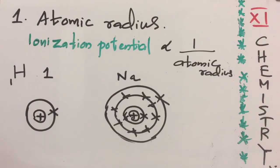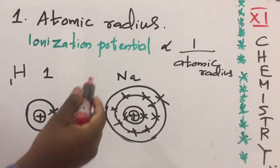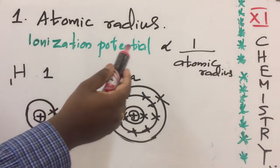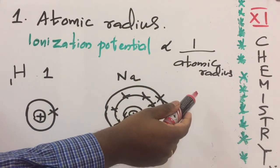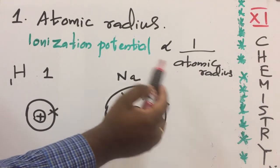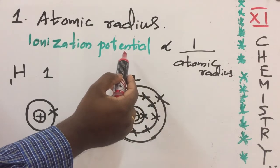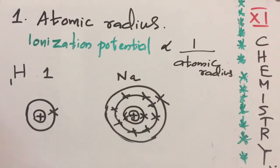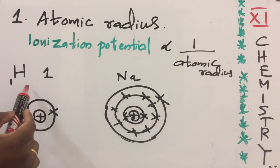An important factor affecting the value of ionization potential of an element is atomic radius. If the atomic radius of an element is high, then the value of ionization potential of that element is found to be low. That is, ionization potential is inversely proportional to atomic radius — higher the atomic radius, lower the ionization energy.